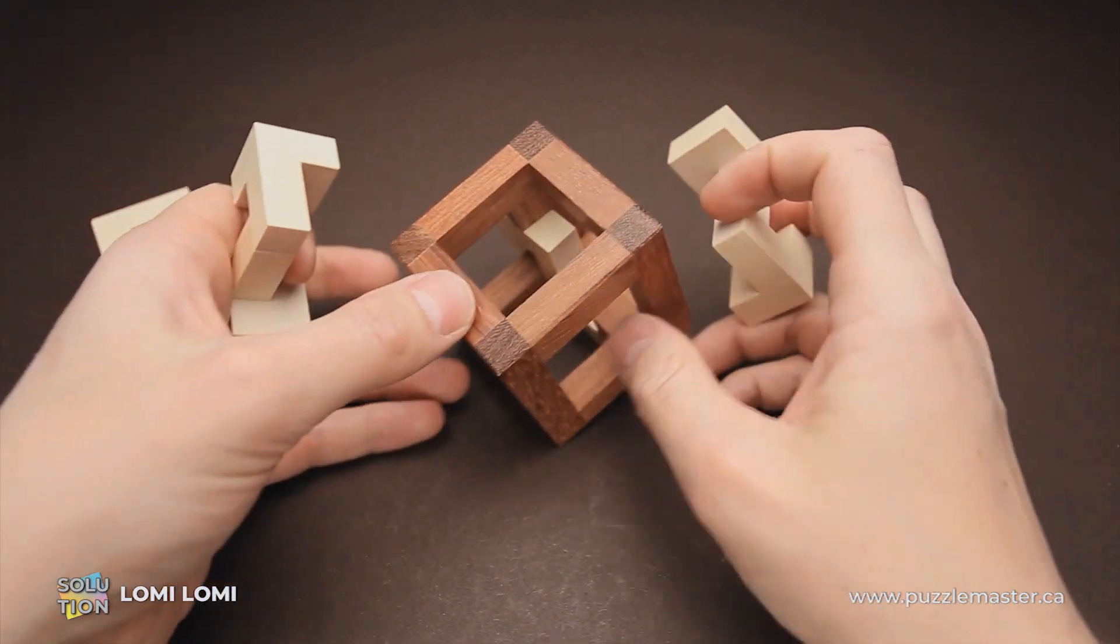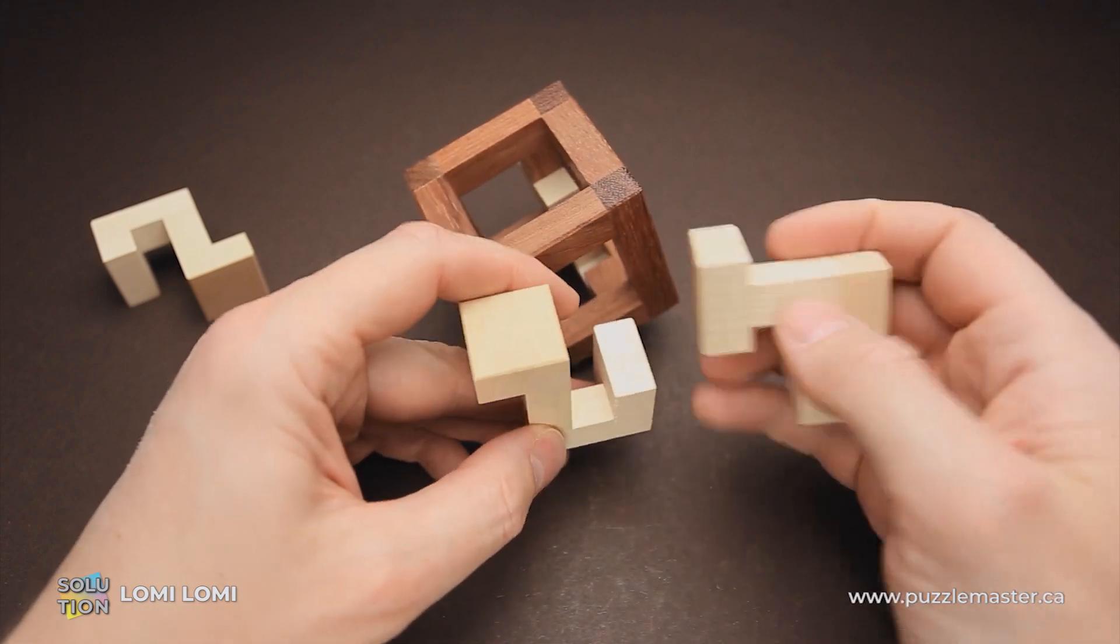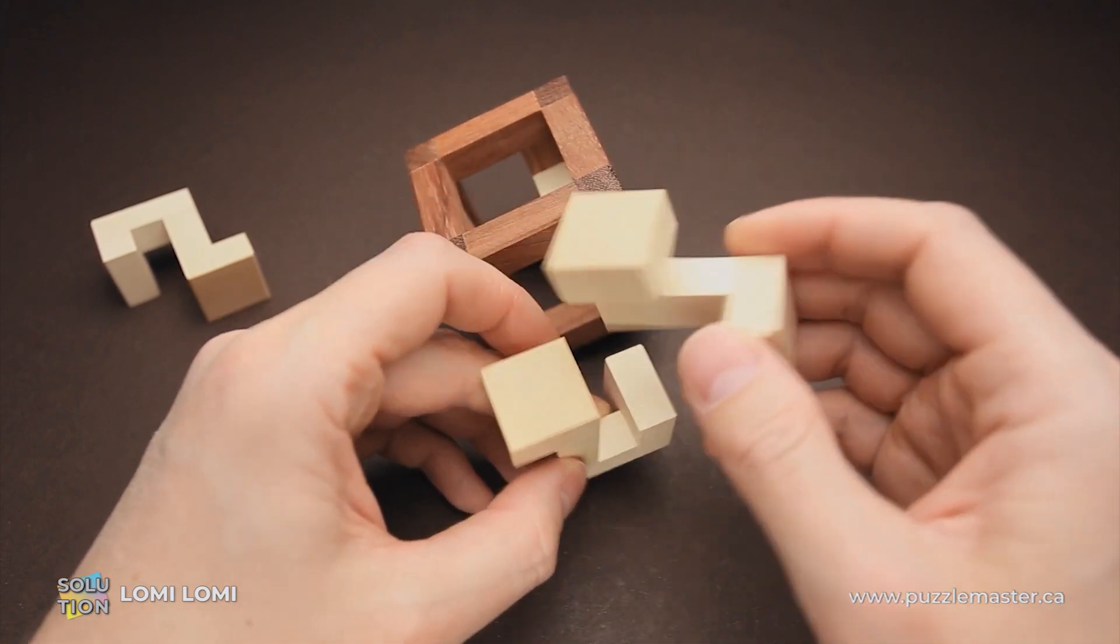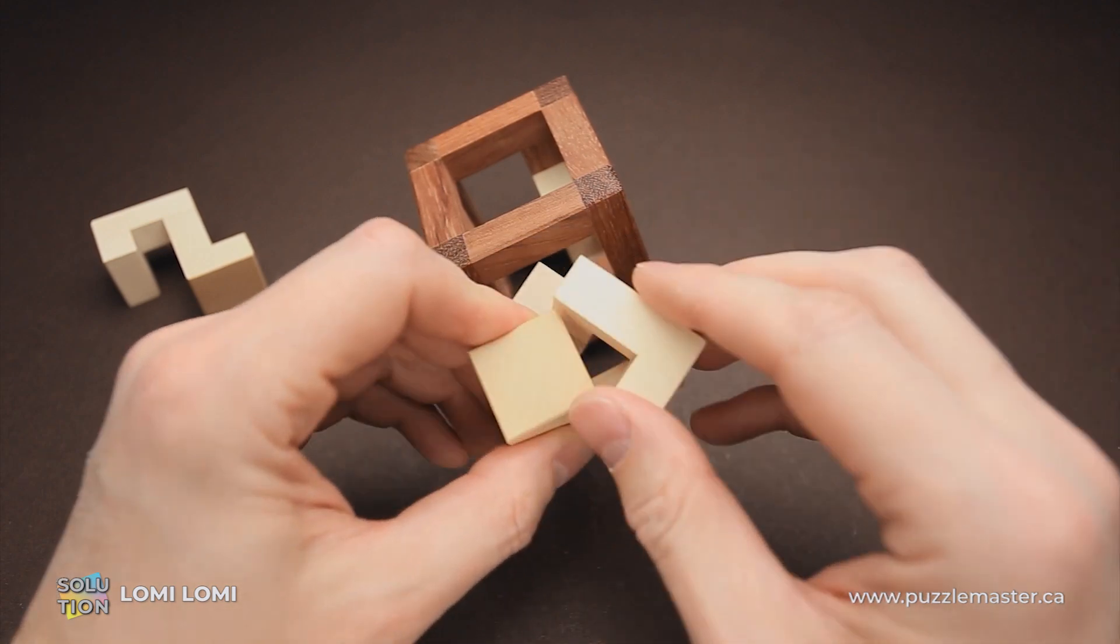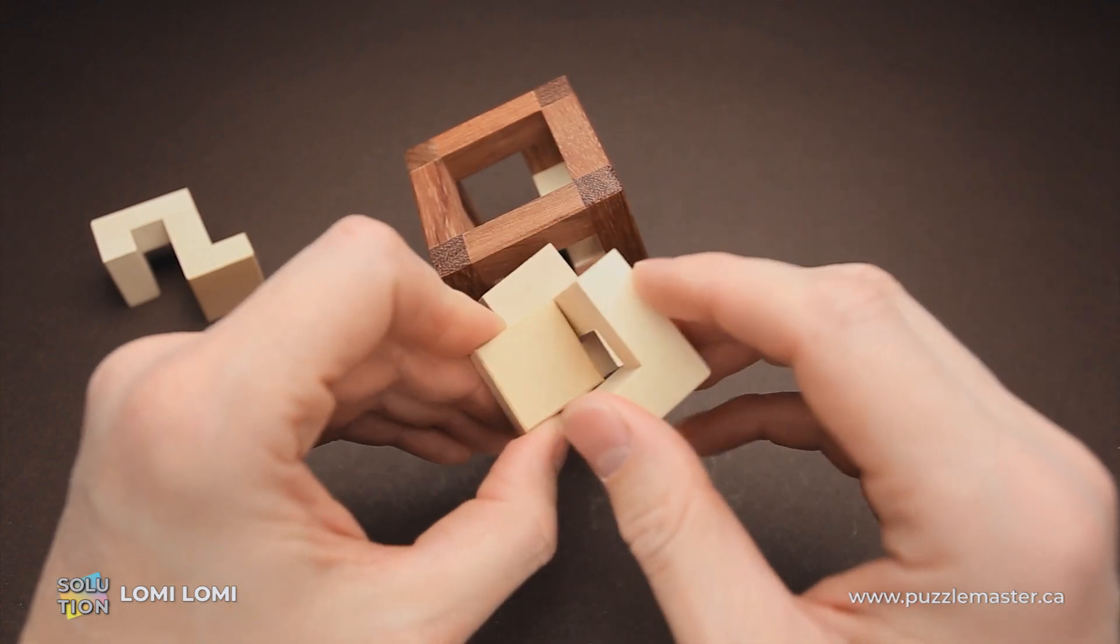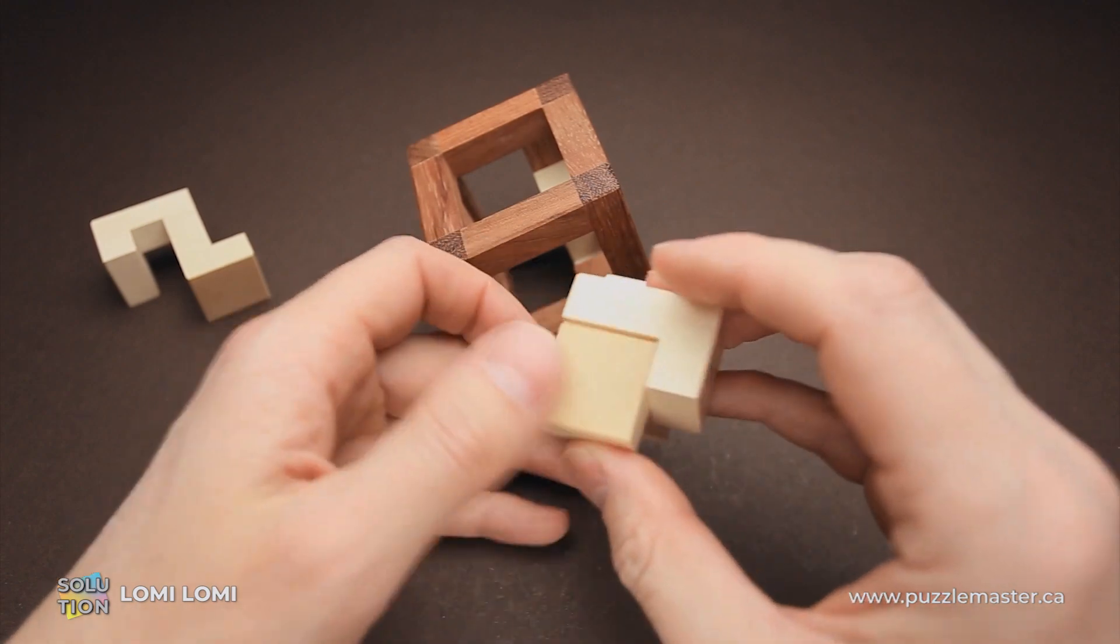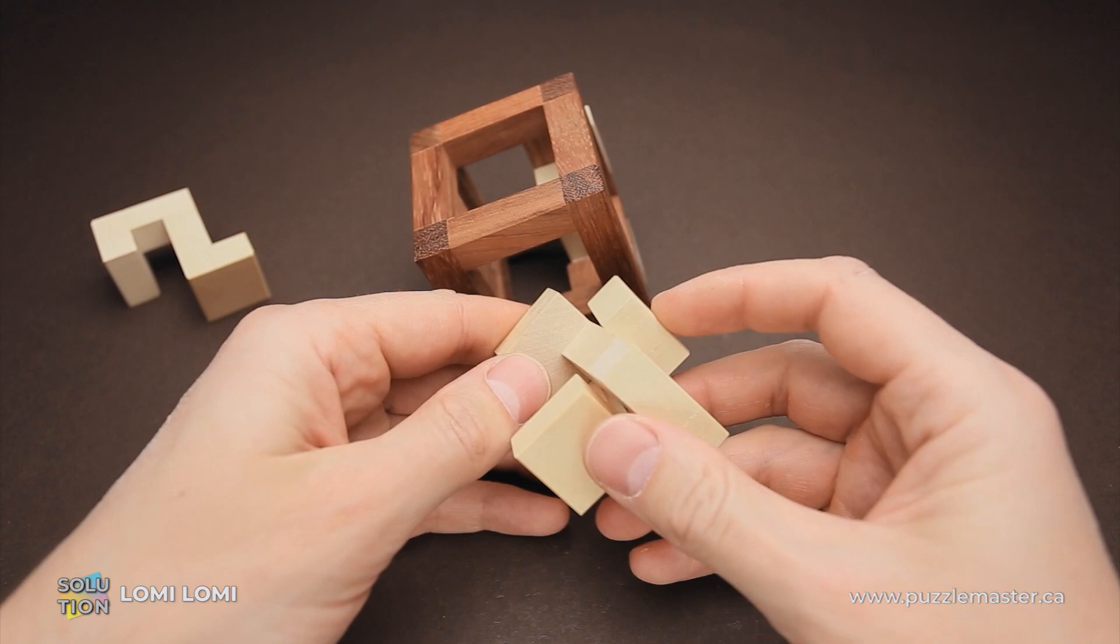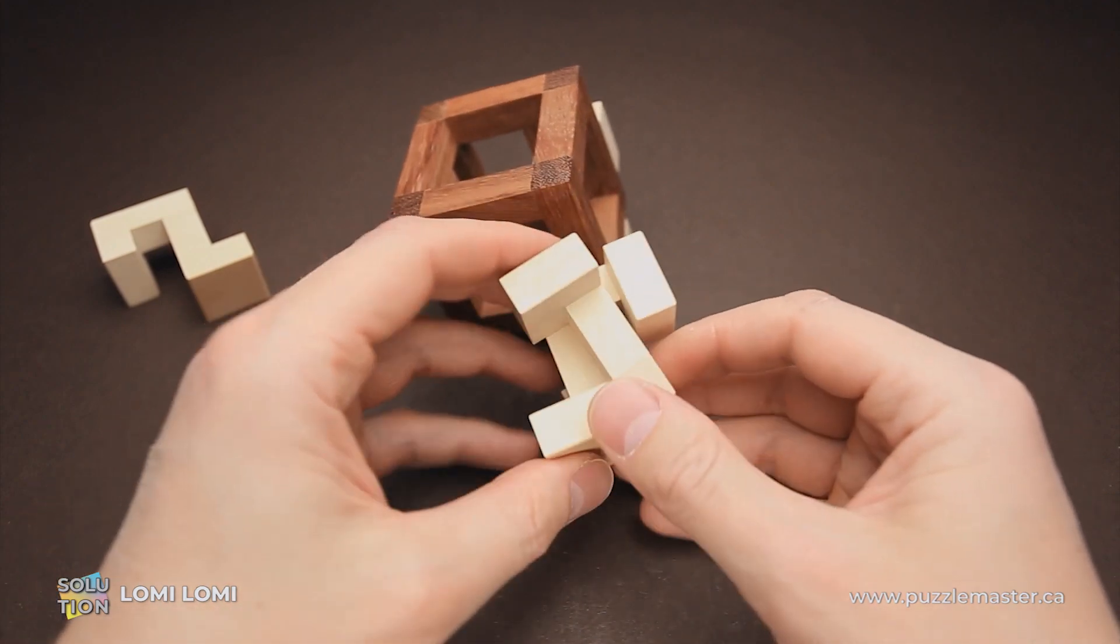Next, we grab two more parts and we have to put them together in such a way that we create this shape. You put two parts together and it will be exactly the same from each side.